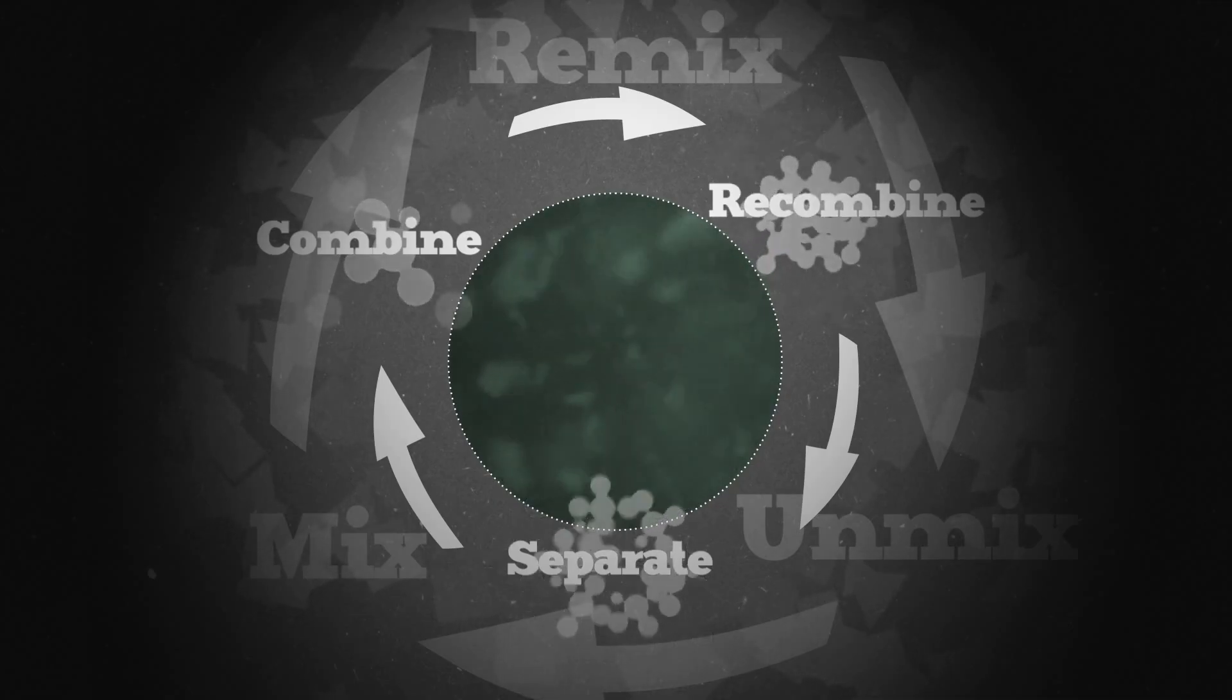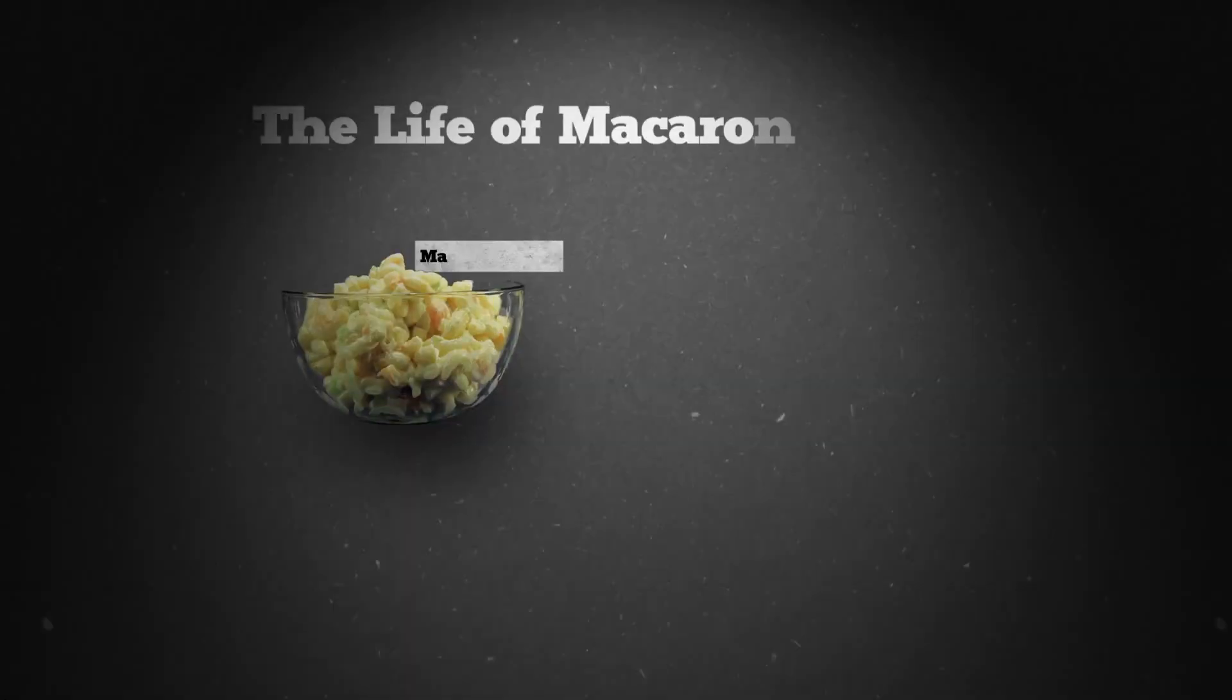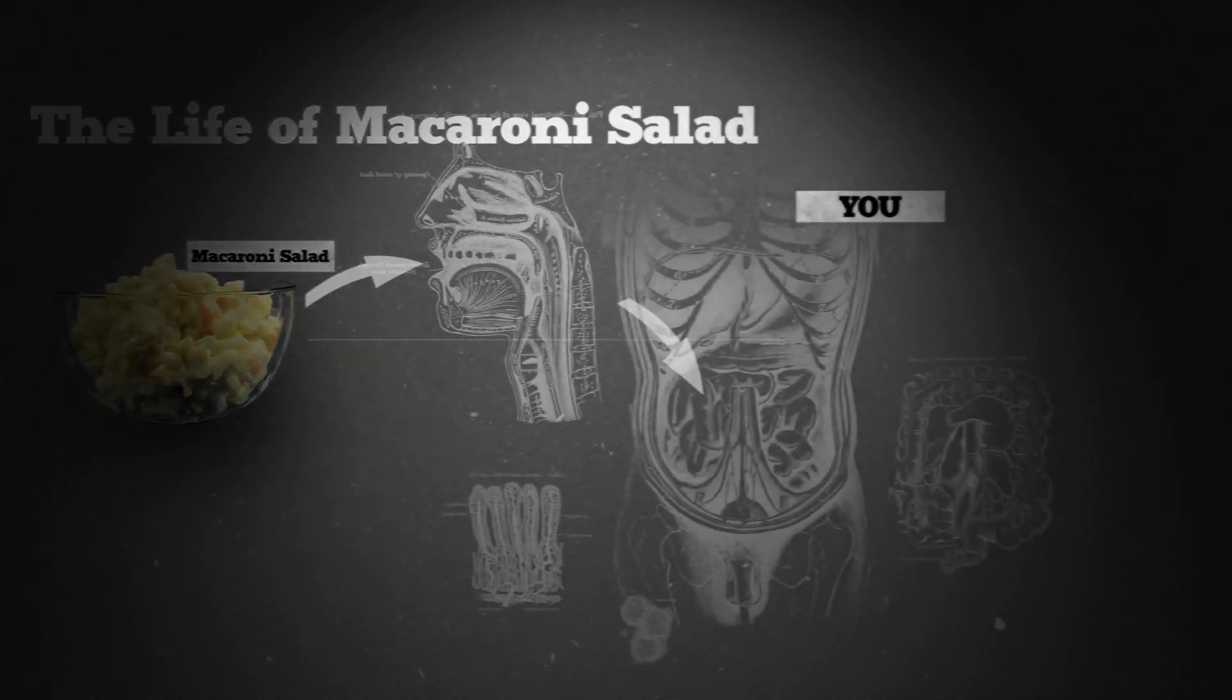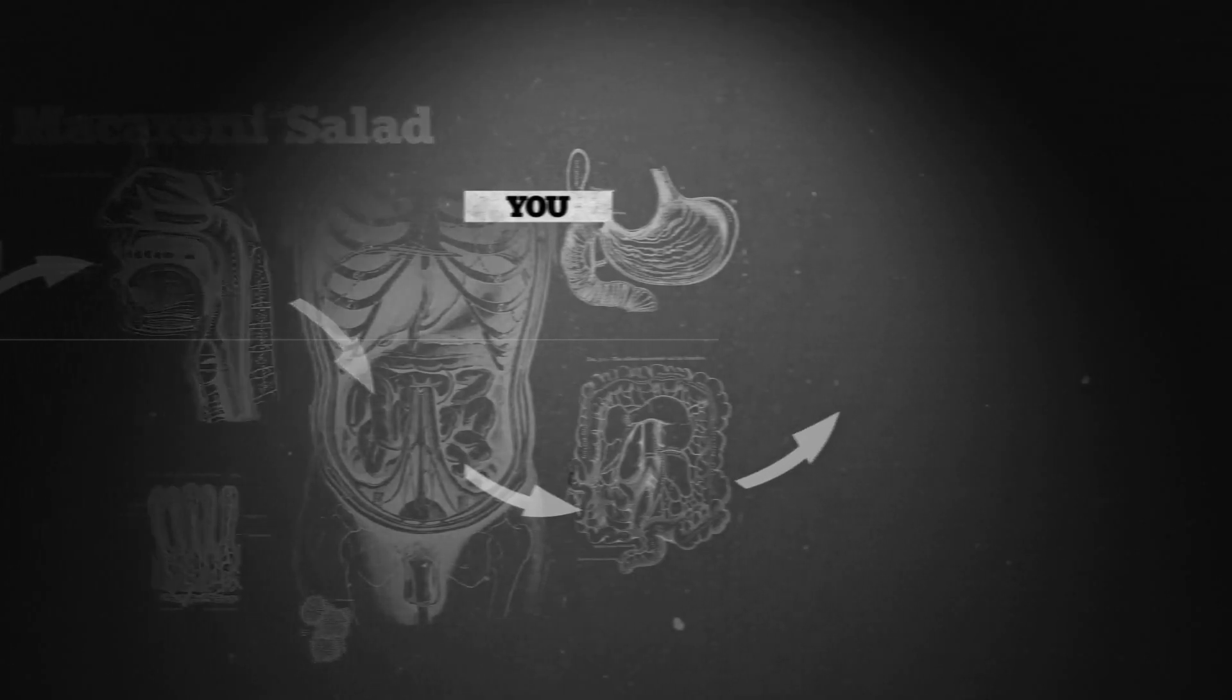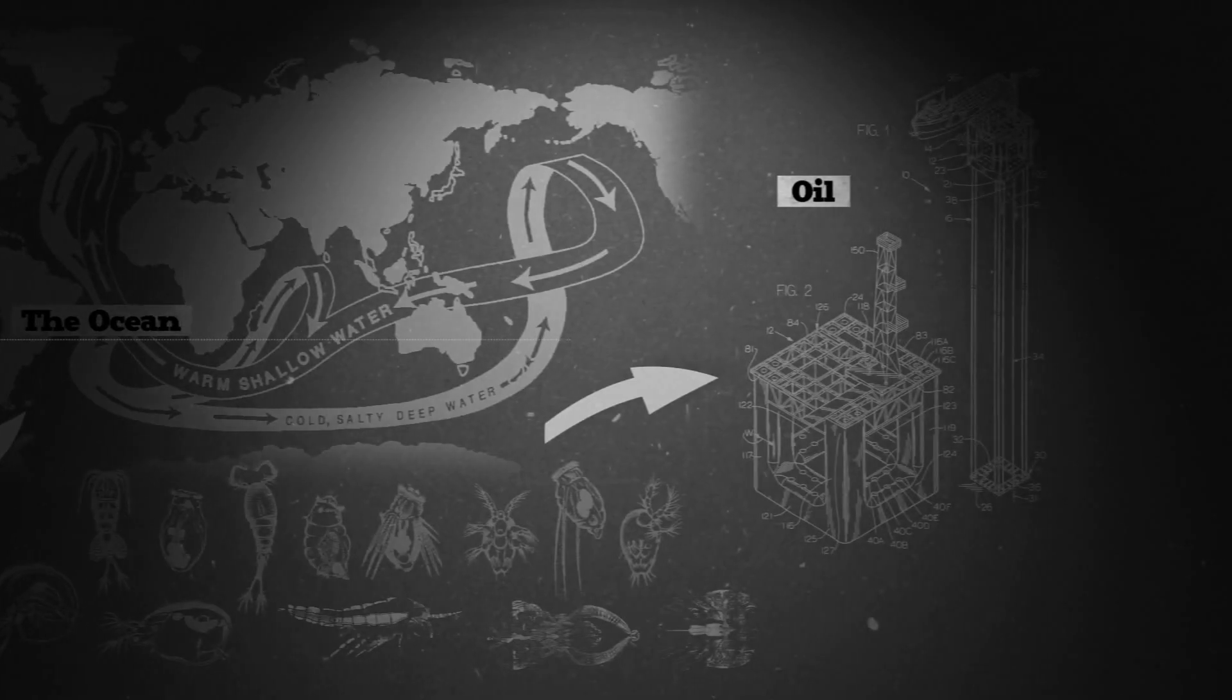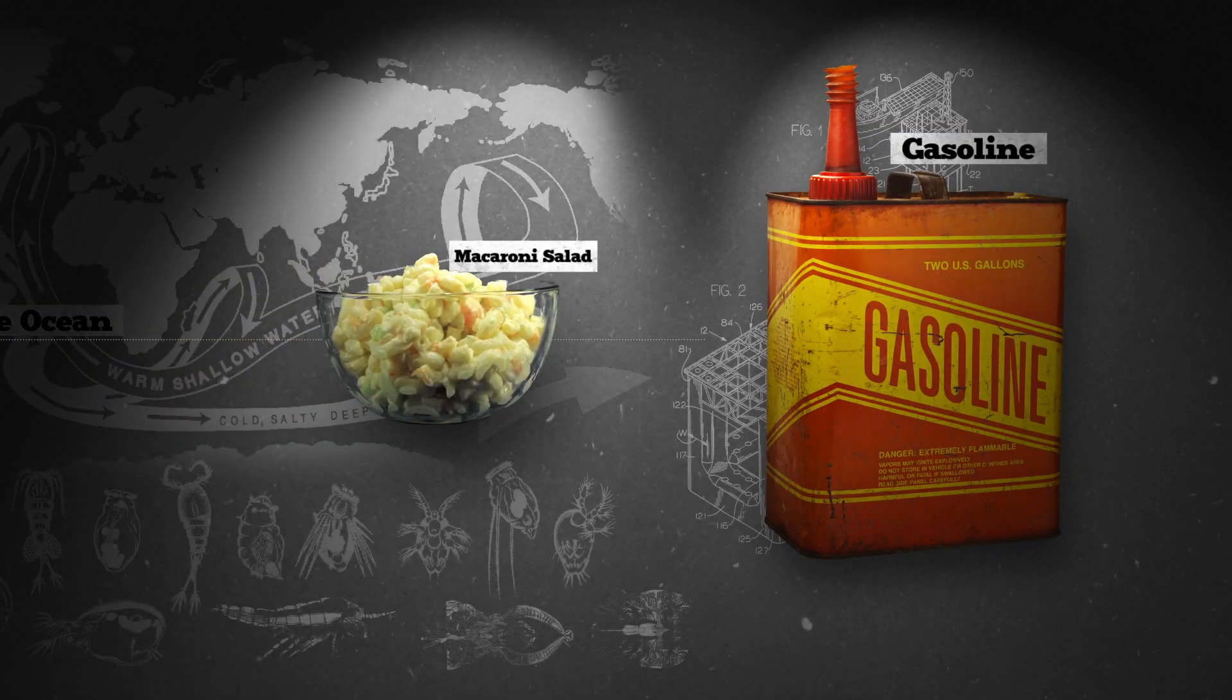The stuff that things are made of is always in flux. It's always changing. Macaroni salad is only macaroni salad for a short time. You eat it, some of it becomes part of you, the rest eventually goes into the ocean, and gets eaten by other animals that die, and after millions of years they turn into oil, which is where gasoline comes from. And that's why gasoline and macaroni salad are not that different. They're both made of the same stuff, just one tastes better.